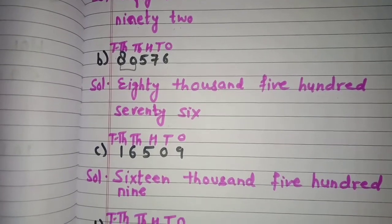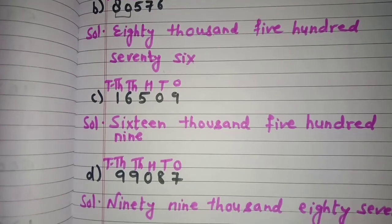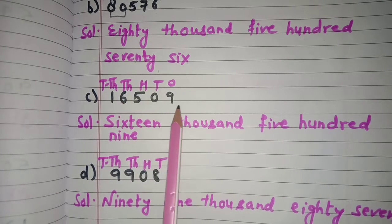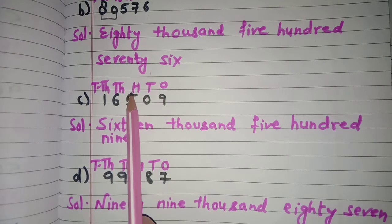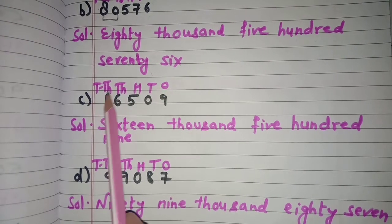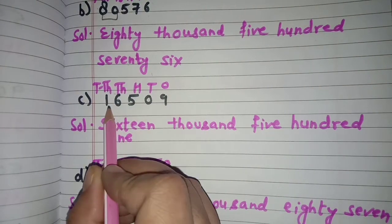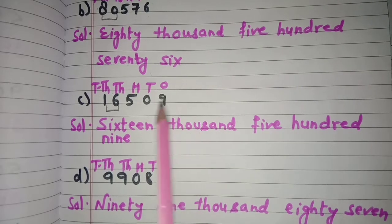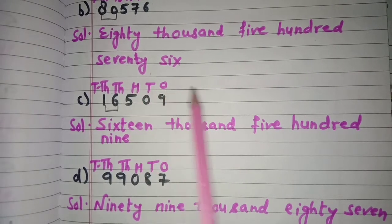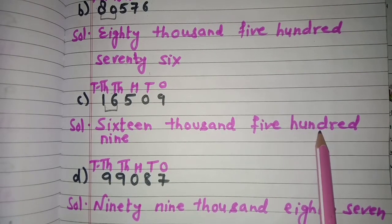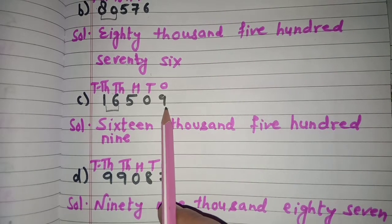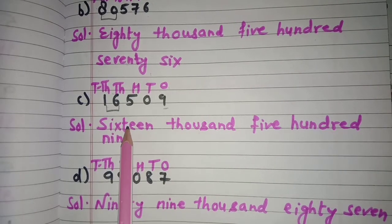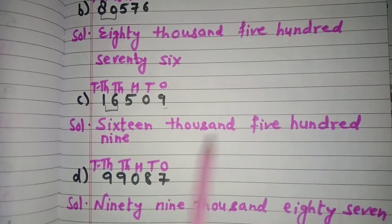Now next is part c: 16,509. Mention the places — ones, tens, hundreds, thousands, ten thousands. Then 1 and 6 come under the thousands period, so it is 16,000. Then 5 is at hundreds place, so 500. Next at ones place we have 9, which is a single digit, so we write 9. The number name is sixteen thousand, five hundred and nine.